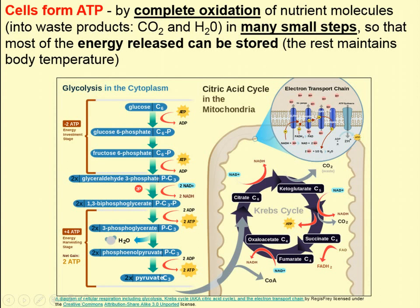To wrap up and come full circle: cells form ATP by the complete oxidation of nutrient molecules — in this case glucose — into carbon dioxide and water, done in many small steps. If it were done in one big step, all the energy would be released at once and most would be wasted. Instead, going through glycolysis, the citric acid cycle, the electron transport chain, and oxidative phosphorylation, the energy is extracted little by little from glucose and stored as ATP. That's the end of the video for Module 3.